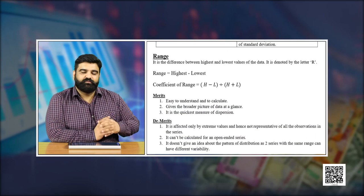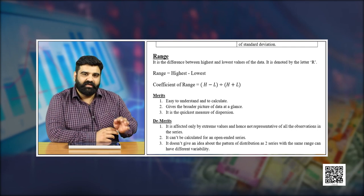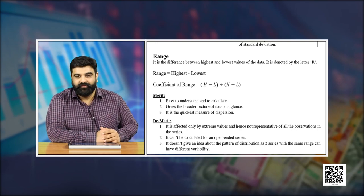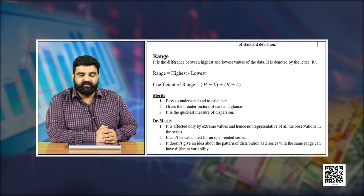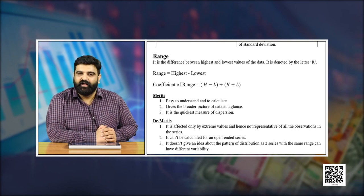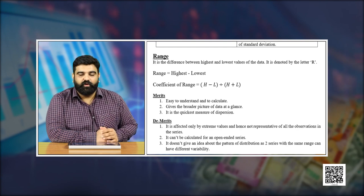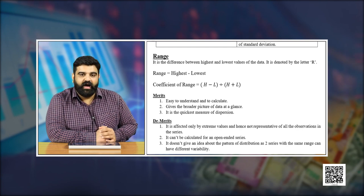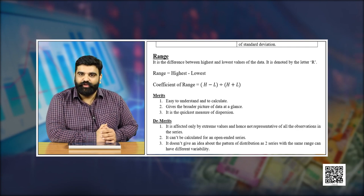Let us start with the first measure of dispersion: range. This is the simplest measure of dispersion — basically the difference between the highest and lowest values of the data. Its formula is: Range = Highest − Lowest. We also have the coefficient of range, represented by the formula: (Highest − Lowest) / (Highest + Lowest), or multiplied by 100 to express as a percentage.